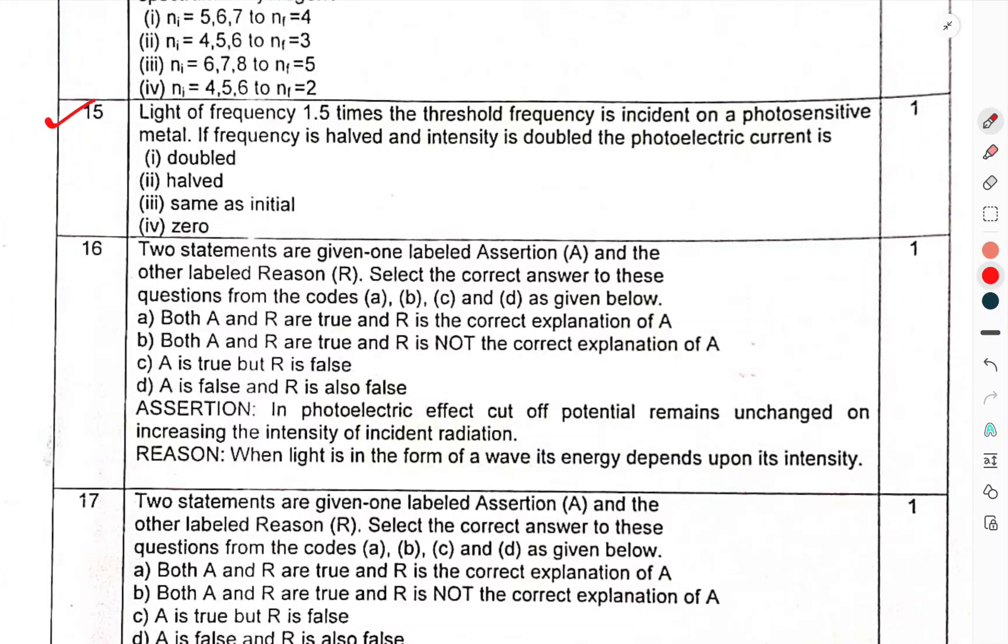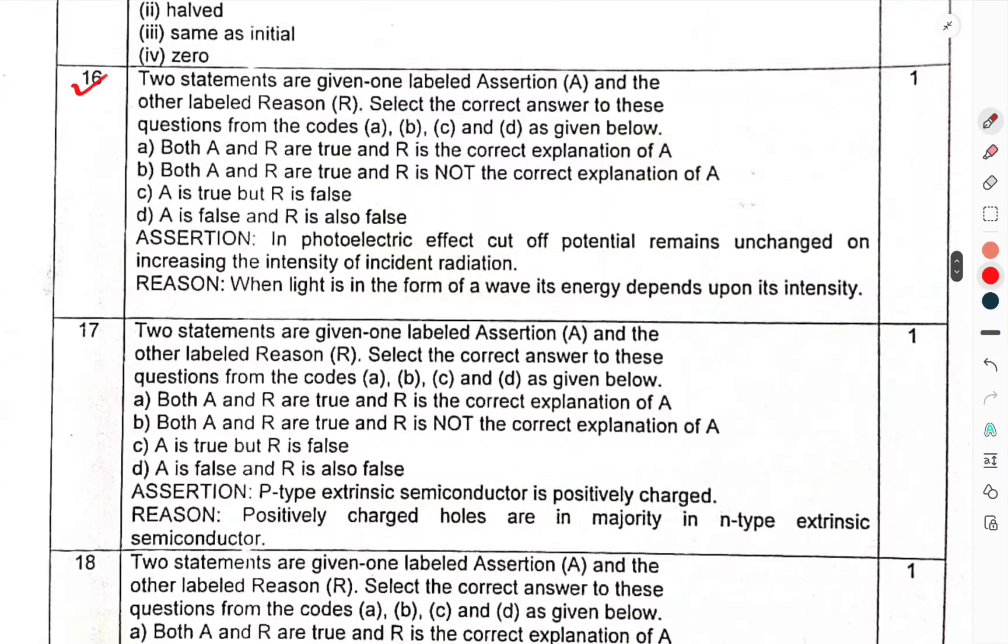Question 15: Light of frequency 1.5 times threshold frequency is incident on a photosensitive metal. If the frequency is halved and the intensity is doubled, the photoelectric current is. Question 16: Two statements are given, one labeled assertion A and other labeled reason R. Select the correct answer to these questions from the codes A, B, C and D as given below.